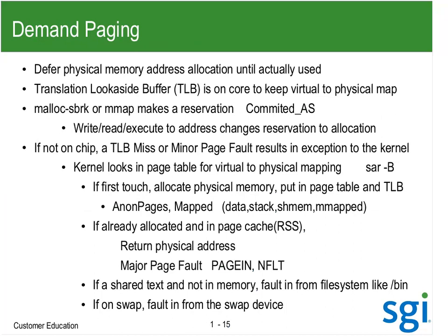Demand paging basically says: I'm not going to worry about memory until I actually use it — we defer physical memory allocation and figure out what address it is only when needed. The hardware nowadays has what's called a TLB buffer — a translation look-aside buffer — on the core. If you've got four cores, you've got four TLBs. If you've got hyperthreads and eight CPUs on those four cores, you still only have four TLBs; the hyperthreads are sharing TLBs. The TLB used to be called the MMU — we're translating virtual to find the physical. The program only knows the virtual, and on paging machines, the kernel determines the physical.